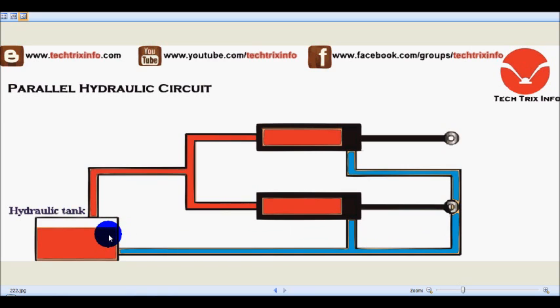Let's identify the components. Here we have the hydraulic tank, and this is a pressure line going from the hydraulic tank. You can see two parallel lines going towards two hydraulic rams which are connected in parallel. From both hydraulic rams, there is a blue marked return line coming back towards the hydraulic tank.